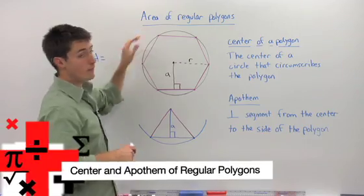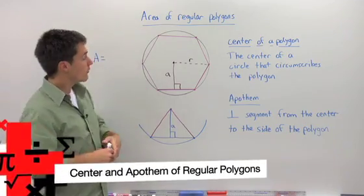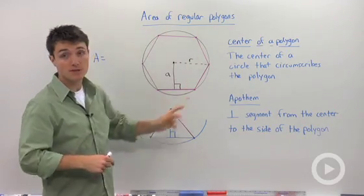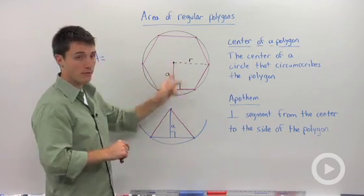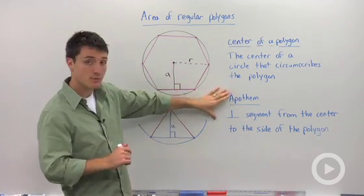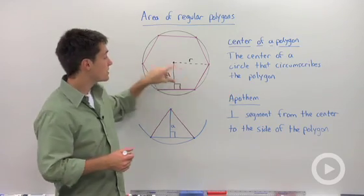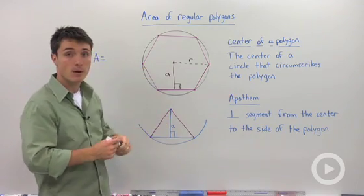In order to find the area of any regular polygon, first we need to inscribe it inside a circle. By doing that, we've created this apothem, where the definition of the apothem is a perpendicular segment from the center to the sides of the polygon.